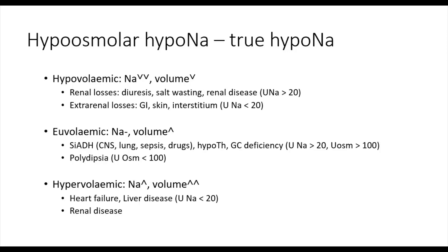If the patient appears clinically dehydrated or hypovolemic, then the patient has hypovolemic hyponatremia, where there are true sodium losses and, to a lesser extent, volume loss. The sodium losses can come from the kidney, which would be pathological, because in a hypovolemic state the renin-angiotensin-aldosterone system should be activated, and therefore there would be more distal sodium reabsorption, and there should be less sodium in the urine.